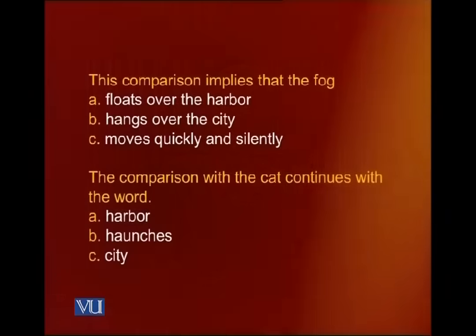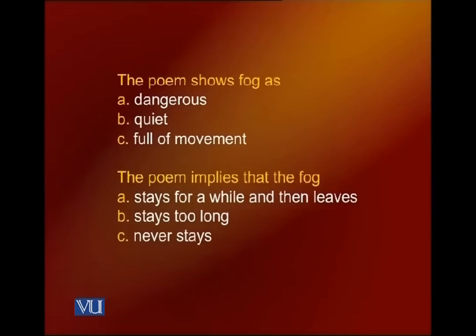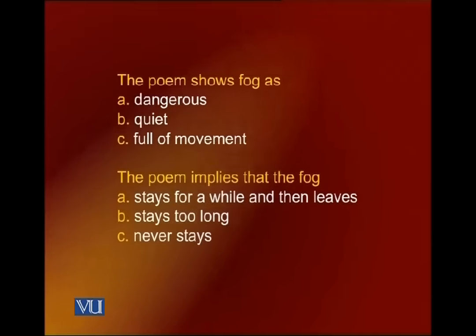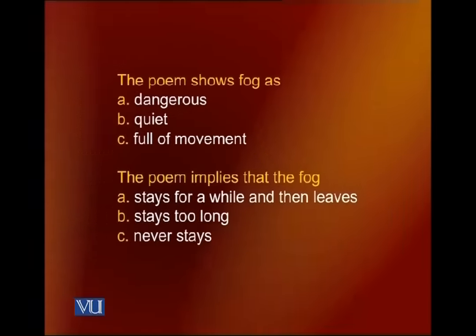The comparison with the cat continues with the word 'haunches' — you know what haunches are; it's the way a cat sits, watching silently. The answer to question three is B — haunches. Question four: the poem implies that the fog stays for a while and then leaves — the answer is A. And the last question: the poem shows fog as dangerous, quiet, or full of movement? The answer is B — quiet. You read two poems and saw how the poet implies things which are never directly stated.